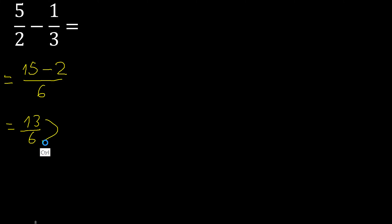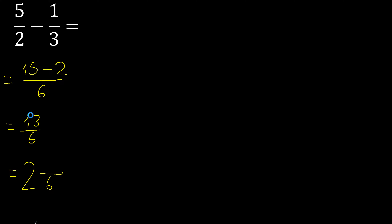13 is greater, therefore mixed fraction. 6 times which number is nearest to 13 but not greater? 6 x 3 = 18, which is greater. Multiply by 2: 12 — it's not greater. 13 minus 12 is 1.